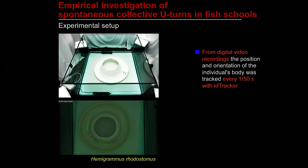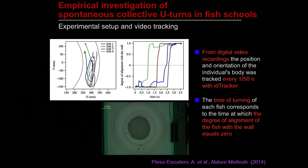Here is the experimental setup we use for this series of experiments. It is protected from the outside with white curtains so there are no external visual cues that can influence the behavior of the fish. We filled the arena with a limited depth of water so that the motion of fish was mostly in two dimensions, then tracked the position of fish with ID-tracker. Here is an example of collective U-turns in a group of four fish, showing the corresponding trajectories and the degree of alignment of the fish with the wall.